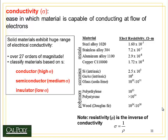Let's assume we have a wafer and we want to understand the conductivity of that wafer. What is conductivity? It's the ease with which a material is capable of conducting the flow of electrons. There are three basic categories of solid materials for conductivity, and it's important to recognize that conductivity varies over an enormous spectrum — over twenty-seven orders of magnitude between insulators and conductors. Conductors have high conductivities (sigma), semiconductors have medium conductivity, and insulators have low conductivity.